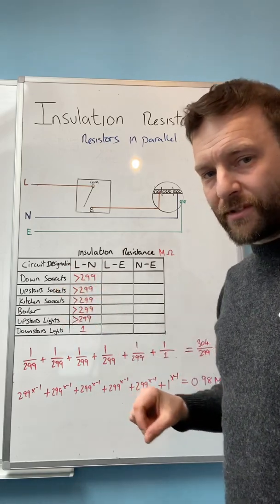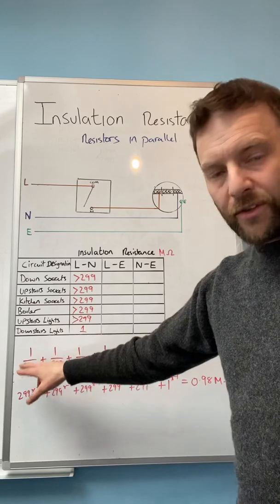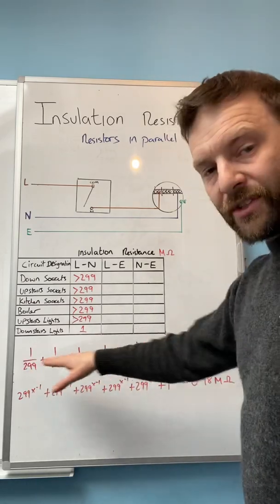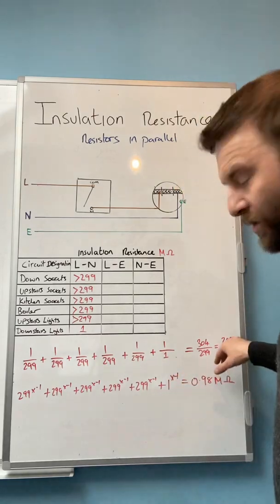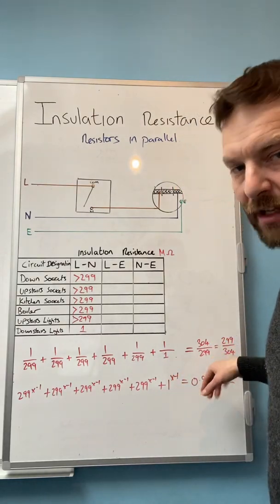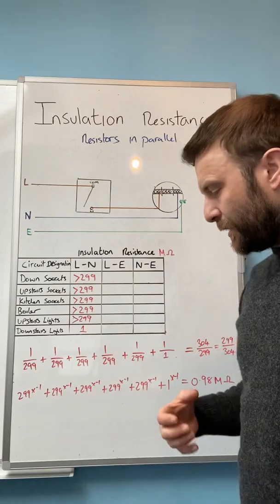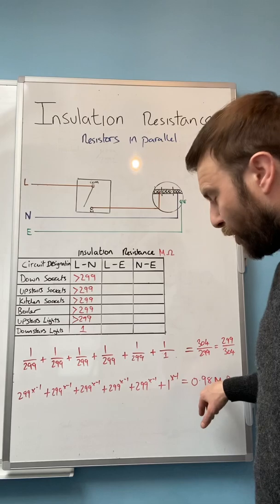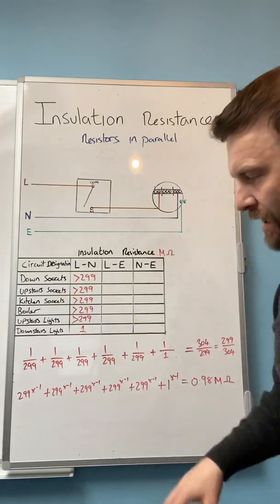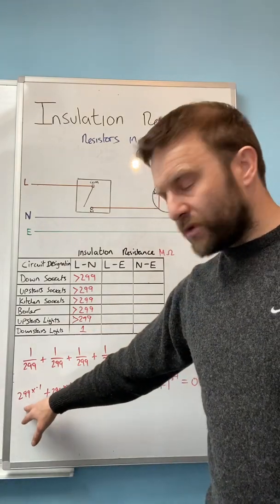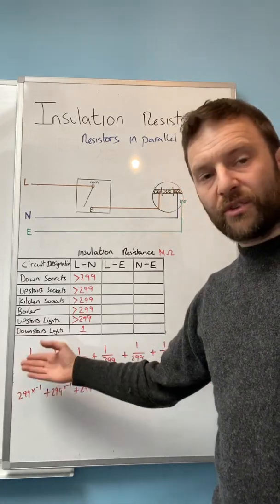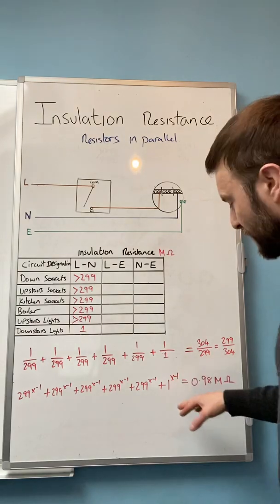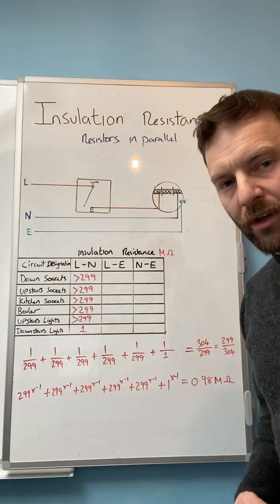How do we work out resistors in parallel? Well if you think back to college we have to do fractions. So you can either type out the fractions in your calculator and then that will give you 299 divided by 304 and then if you make that into a decimal point it will come out at 0.98 mega ohms. So we're actually below 1 mega ohm for the whole installation. If you've got a scientific calculator you could also put in 299 to the reciprocal of 1, do that five times and then plus 1 to reciprocal of 1 and that still comes out at 0.98 mega ohms.